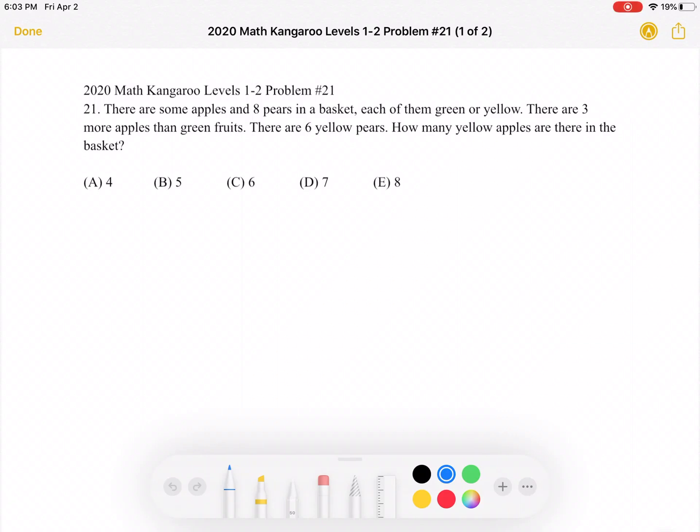This is the 2020 Math Kangaroo, levels 1-2, problem number 21. There are some apples and 8 pears in a basket, each of them green or yellow. There are 3 more apples than green fruits. There are 6 yellow pears. How many yellow apples are there in the basket?